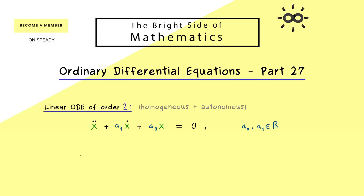We can equivalently reformulate that into a two-dimensional ODE of first order. We let y1 represent our original function x, and y2 represent the first derivative of x, so x-dot. Then we use a vector with two components, y1 and y2, take the first derivative, and the result is a matrix-vector multiplication. We always get a linear system out.